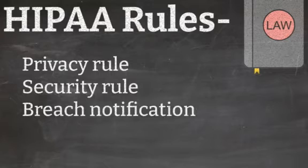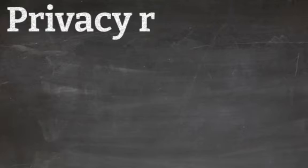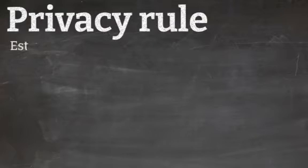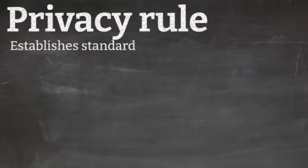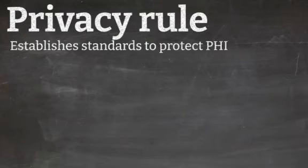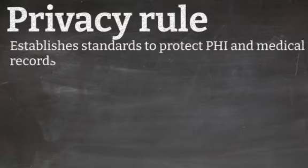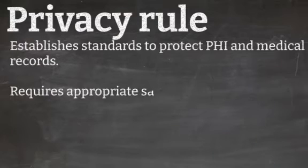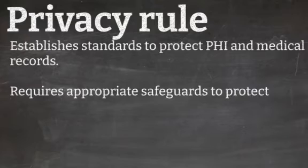HIPAA primarily has three rules: the Privacy Rule, the Security Rule, and the Breach Notification Rule. The Privacy Rule establishes standards to protect PHI and medical records. It requires appropriate safeguards to protect PHI for covered entities and business associates.